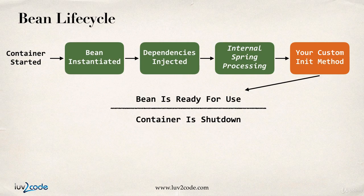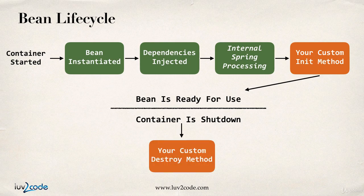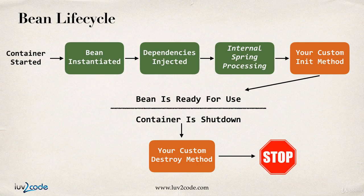At a certain point, the container is actually shut down — meaning your application is shut down, like with context.close — and then you also have a chance to call your custom destroy method. That code will execute before the actual application is stopped, or before the actual bean's lifecycle is over.